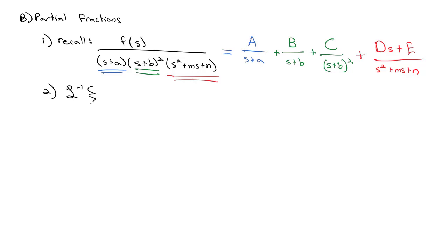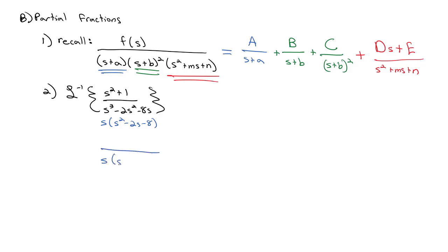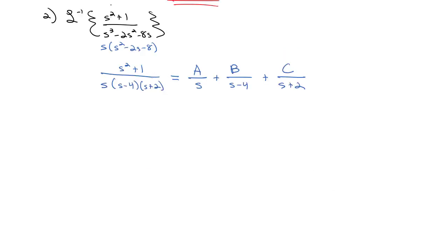If I'm asked to find the inverse Laplace transform of s squared plus 1 over s cubed minus 2s squared minus 8s, I'm going to break that up using partial fractions. First I factor the denominator — factoring out an s leaves s squared minus 2s minus 8, so the denominator is s times s minus 4 times s plus 2, and the numerator is s squared plus 1. We break that up into A over s plus B over s minus 4 plus C over s plus 2. Now I just solve for A, B, and C.